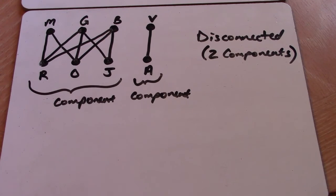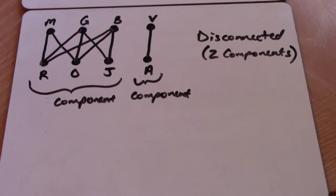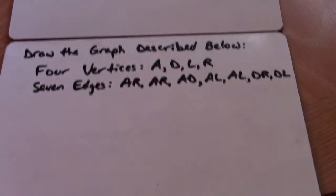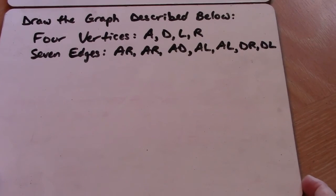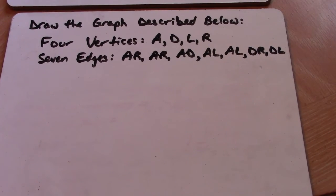The other thing that this video will cover is how to draw a graph based on a given description. So here is a description of a graph, and we're going to draw this graph. This graph will have four vertices: A, D, L, and R, and seven edges: AR, AR, AD, AL, AL, DR, and DL.